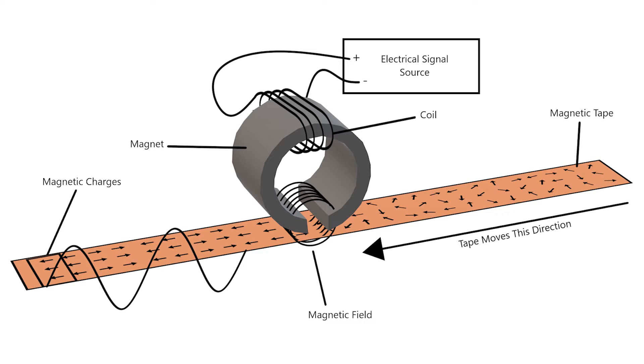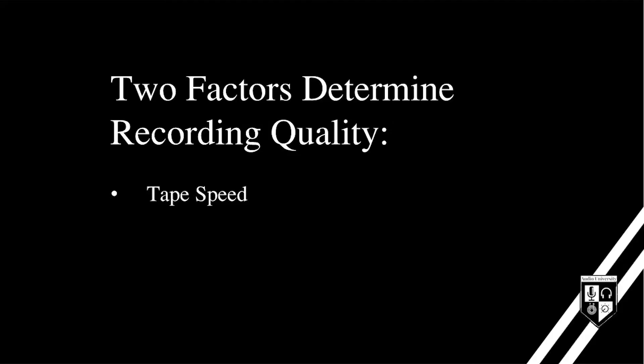To play back the audio, the process is just reversed. The quality of analog tape recordings is primarily determined by two factors: tape speed and tape width. Tape speed is measured in inches per second, or IPS, and the standard for professional recording is 15 to 30 inches per second. Tape width can be utilized in one of two ways: either it improves the sound quality of a single channel, or you can create multiple tracks along the same tape so that you can record different instruments independently.